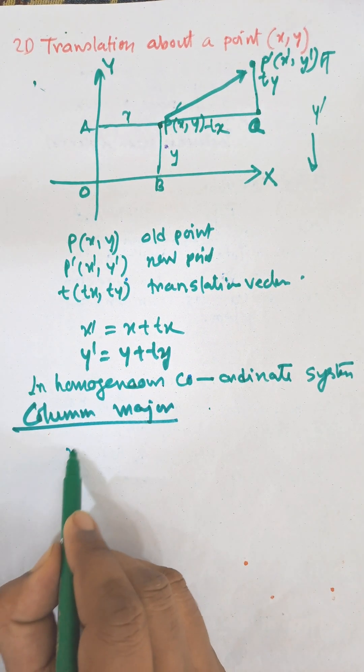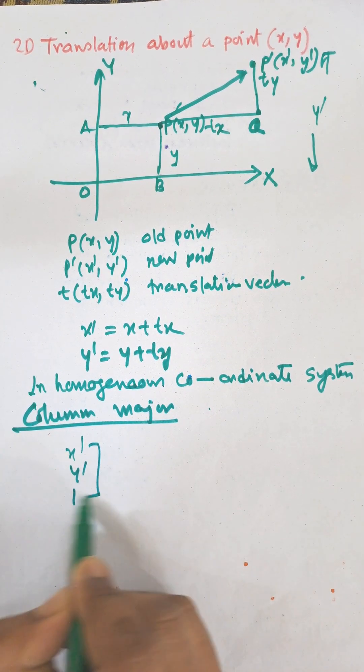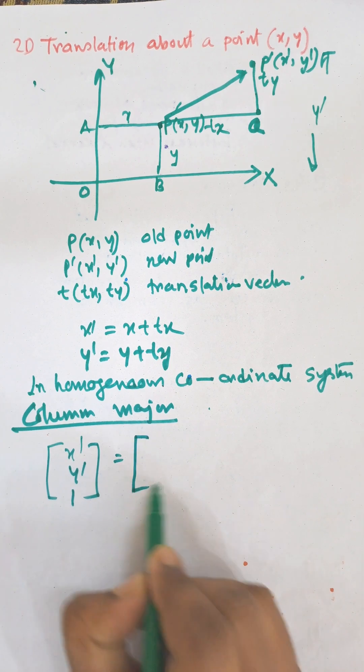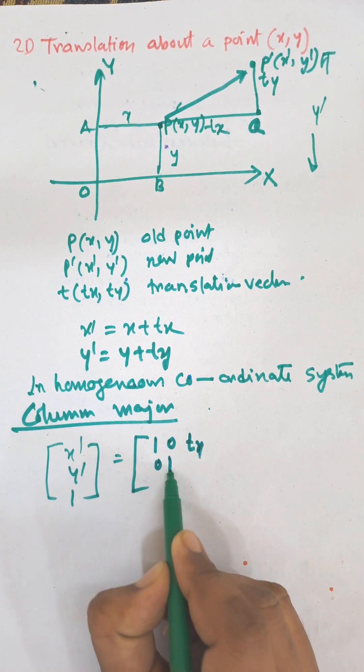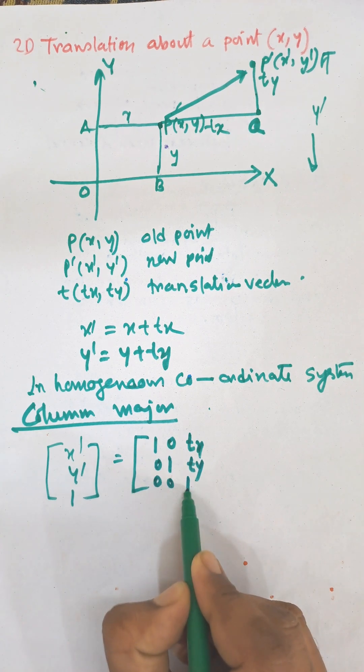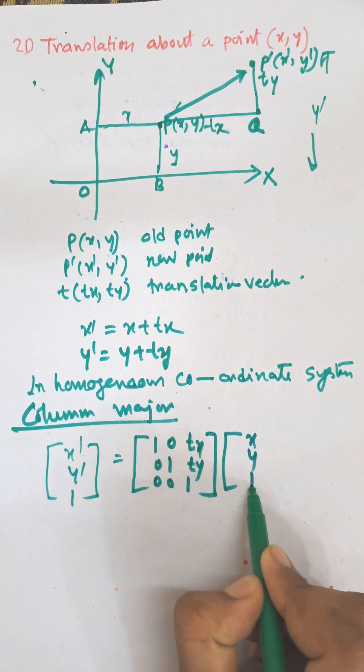That is: [x', y', 1] = [1, 0, tx; 0, 1, ty; 0, 0, 1] × [x, y, 1].